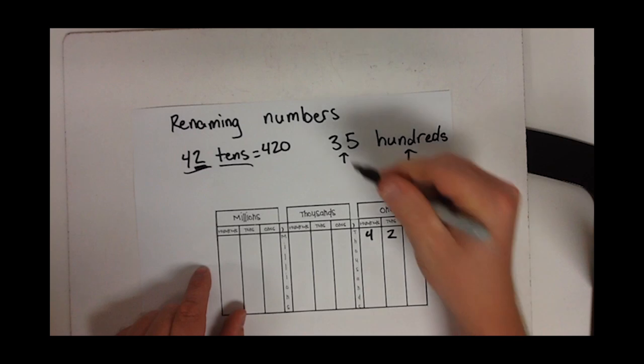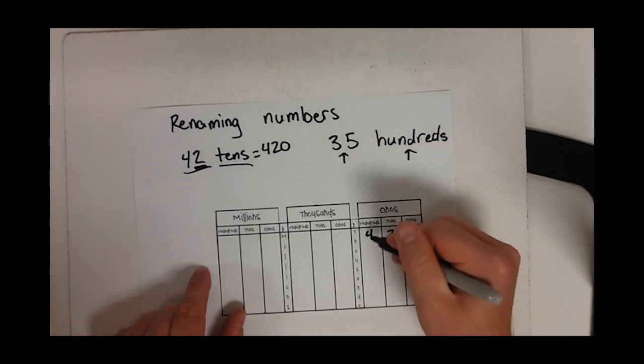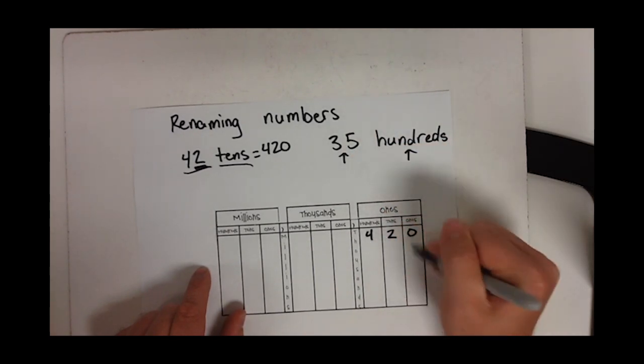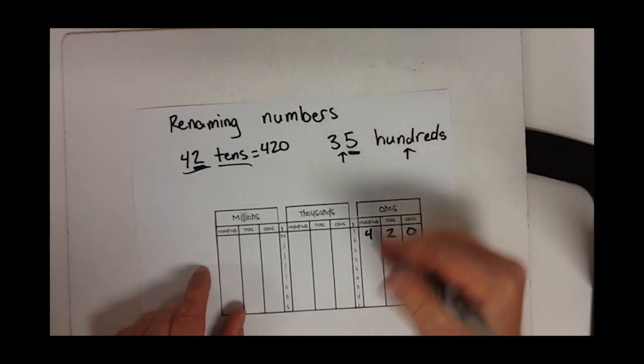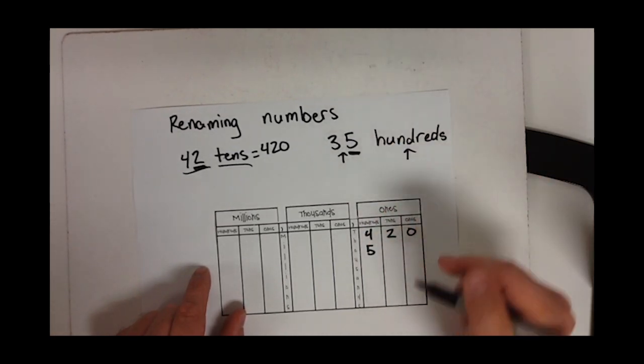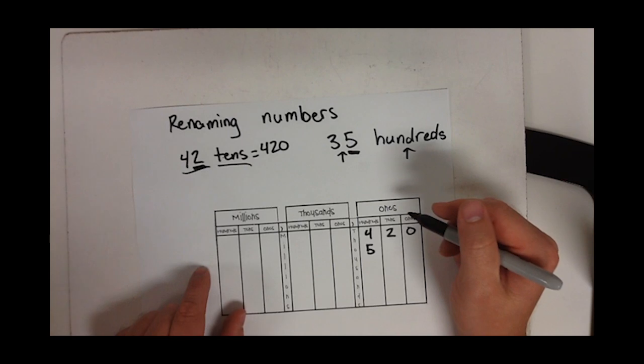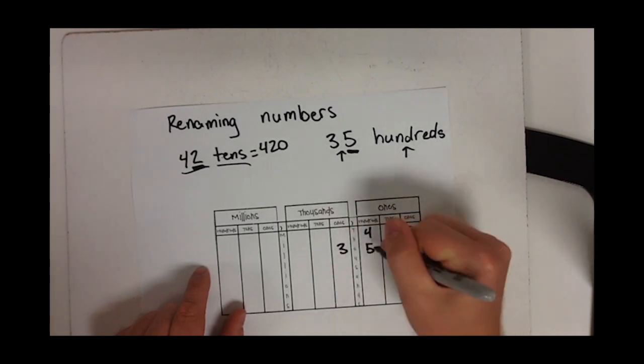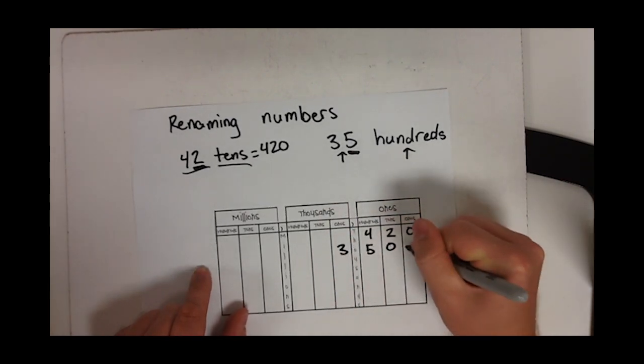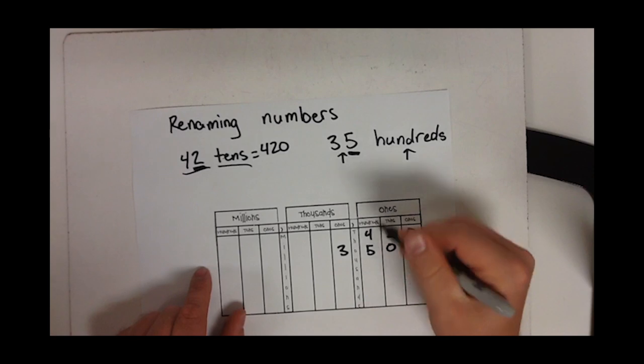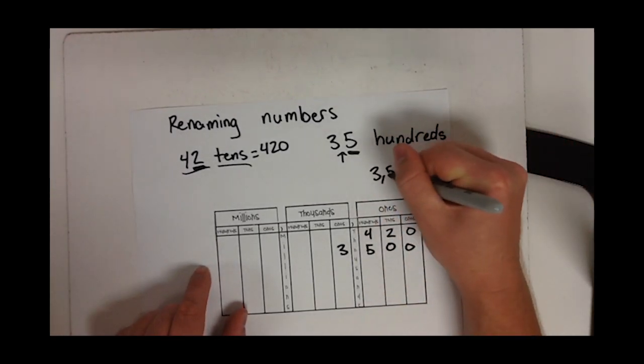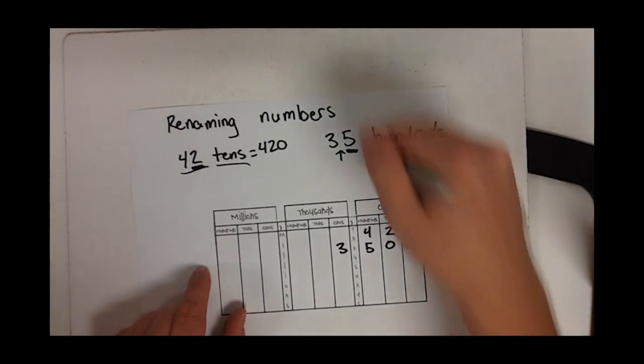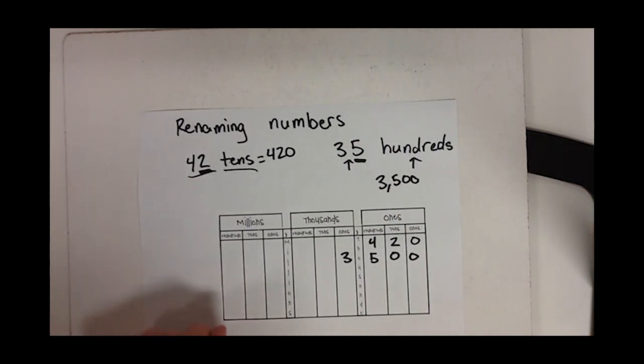We're going to write 35. Remember, you can only write one number in each of these columns. So we take that first number and write it in the hundreds - they're telling you exactly where to put it and what number you need to put. You just have to remember to write that number backwards and fill in the rest of the zeros. So 35 hundreds is the same as 3,500. Those are the same thing, just written differently.